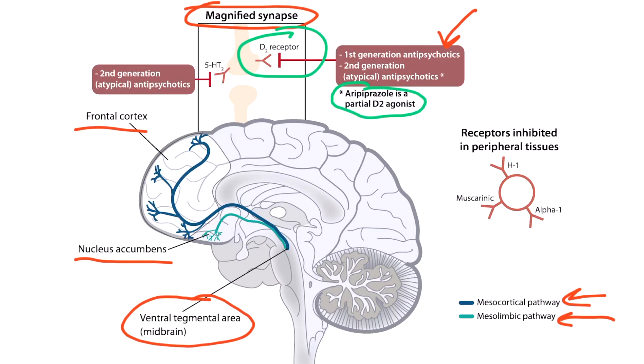On the left of this magnified synapse box, we see second-generation or atypical antipsychotics again. This is to demonstrate how these atypical drugs also inhibit the 5-HT2 or serotonin-2 receptors. There are other receptors that are inhibited by antipsychotics demonstrated over here — for example, histamine-1 receptors, muscarinic receptors, and alpha receptors, most importantly alpha-1.